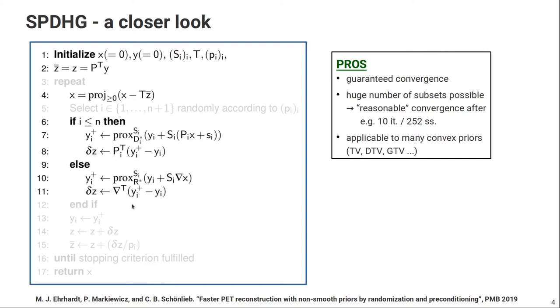So this algorithm has many advantages. First of all, it has guaranteed convergence, and that's true even for a huge number of subsets. In the example that I've shown you on the last slide, the authors used for example 252 subsets. And the algorithm is very generic, so you can apply it to PET reconstruction with many different priors: total variation, directional total variation, generalized total variation, and so on.